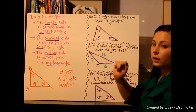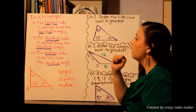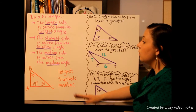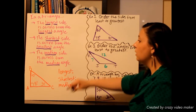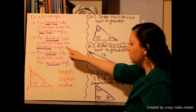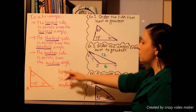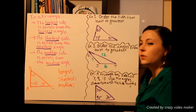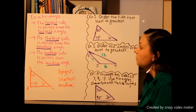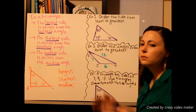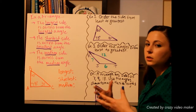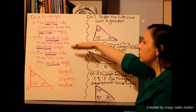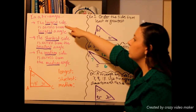In a triangle, the longest side is across from the largest angle. The shortest side is across from the smallest angle. The medium side is across from the medium angle. If you think about it, it's kind of like Goldilocks and the three bears. Papa bear gets the biggest, Mama bear gets the medium, Baby bear gets the smallest.